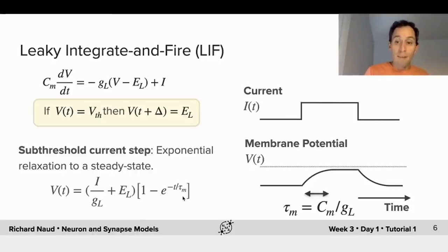And this exponential relaxation will follow a time course that is characterized by the membrane time constant, which is just the ratio of the capacitance and the leak. And this is typically between 10 and 50 milliseconds in real neurons.